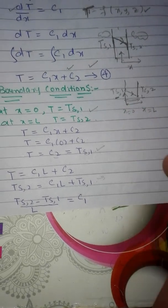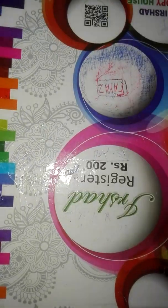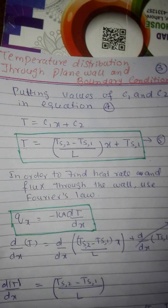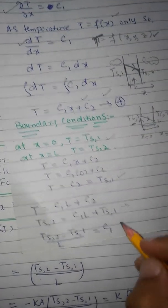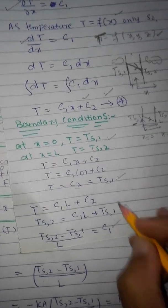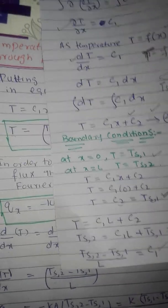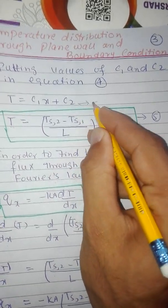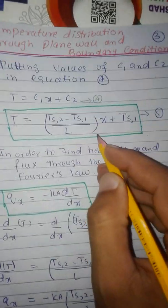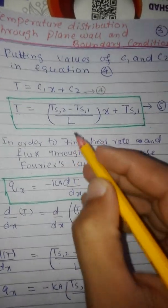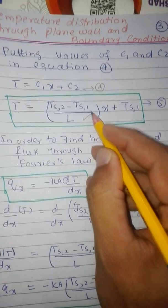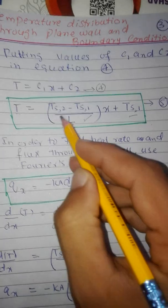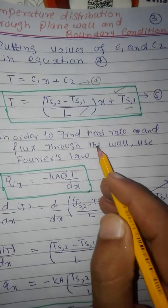Now putting the values of C1 = (TS2 - TS1)/L and C2 = TS1 into equation number 4, which is the linear relation between temperature and the length of the wall, we obtain the temperature distribution through the wall.